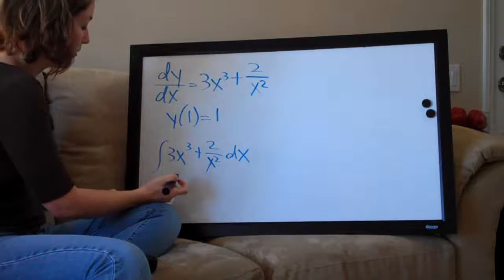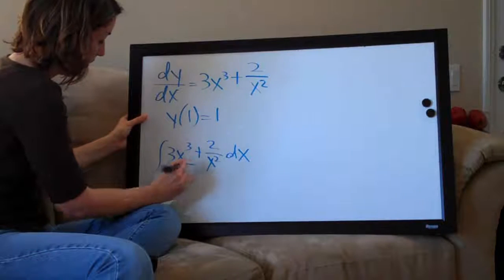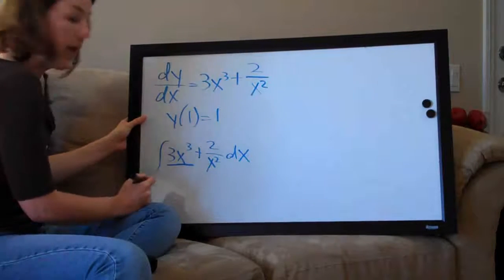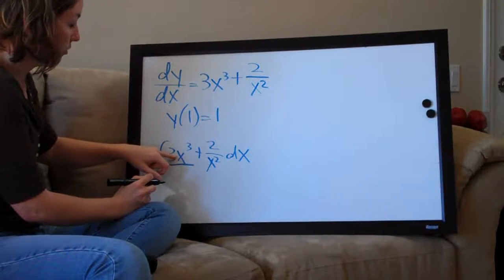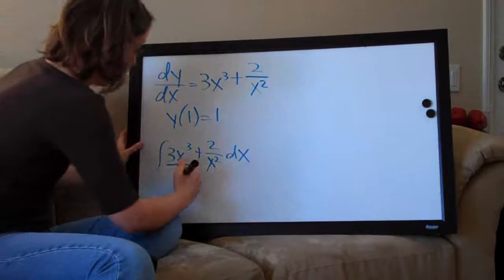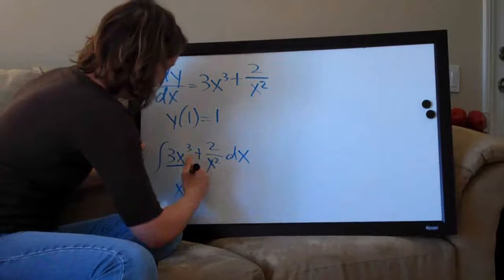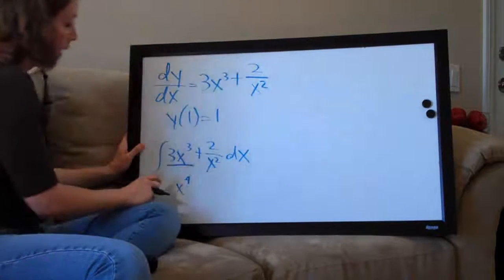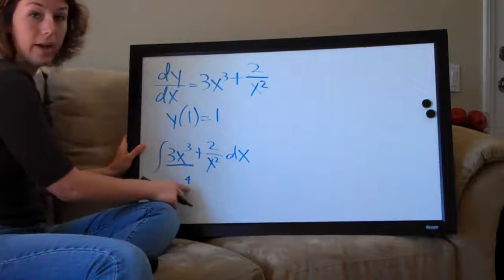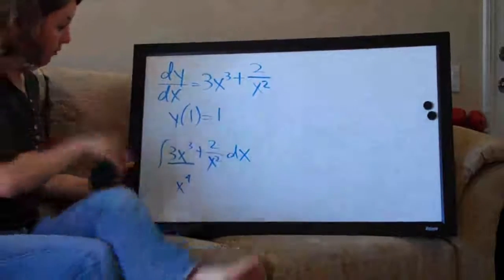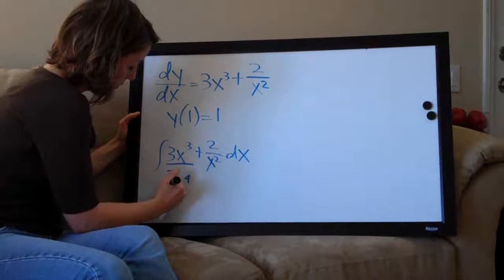We're going to do this one term at a time. First we'll take the integral of 3x cubed, and as always, the way that we do that is first add 1 to the exponent — so the exponent becomes 4 — and then divide the coefficient 3 by the new exponent 4. So the coefficient is now going to be 3 fourths.